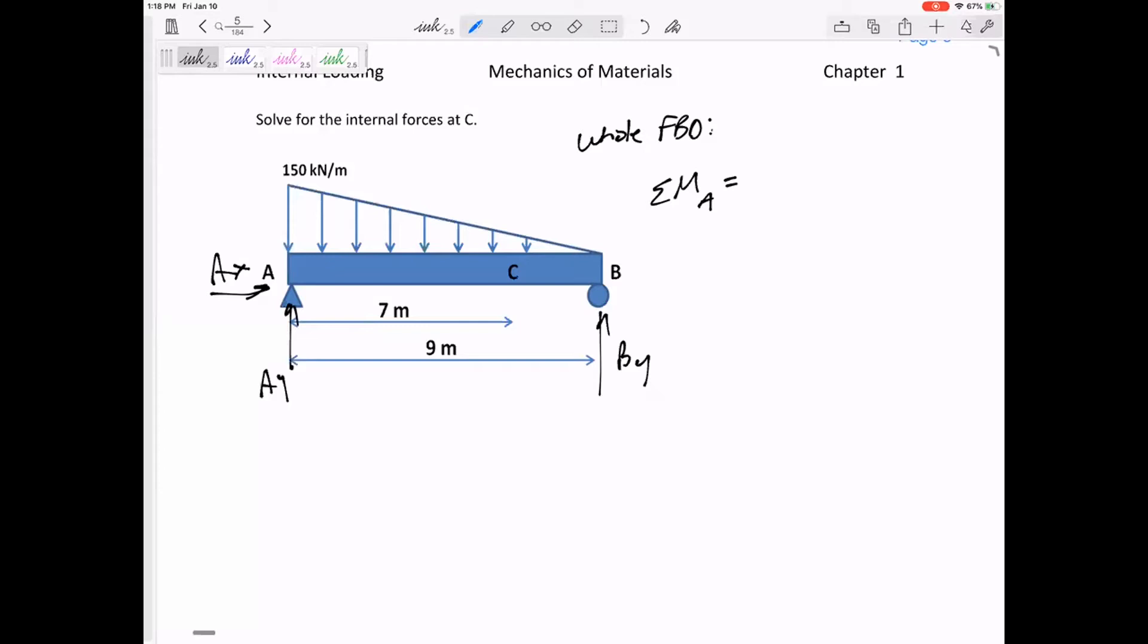I could sum the force in X, that's solving for AX. I could sum the force in Y. But summing the moments about A, then AX and AY don't show up in my equation. And BY is the only thing that shows up in my equation. Let's do this one because you've got to be able to handle distributed loads, especially triangular distributed loads.